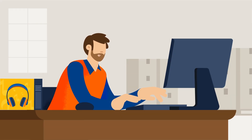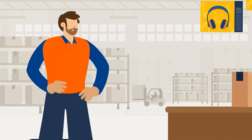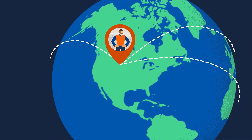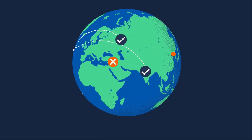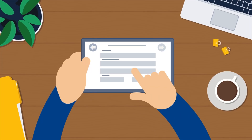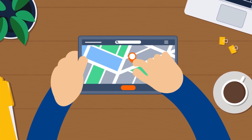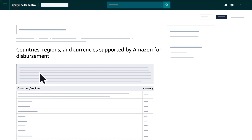Before you can start selling on Amazon, you'll need to set up your payment information. As an Amazon seller, you can sell globally from wherever you are located. However, not all countries, regions, and currencies are accepted. Before you set up your payment information, you'll need to verify your location is supported by Amazon. You can find this information on the Countries, Regions, and Currencies Supported by Amazon page on Seller Central.